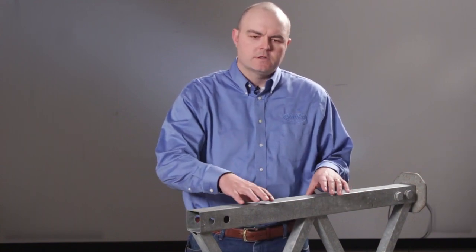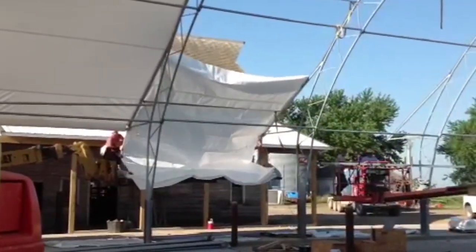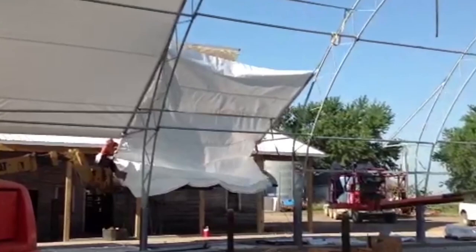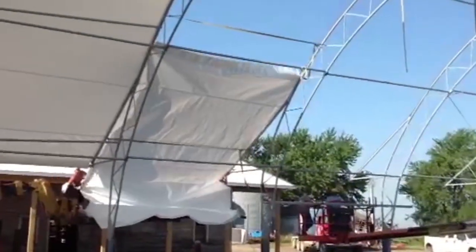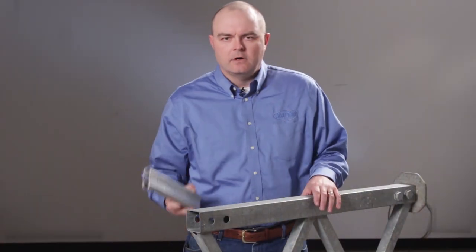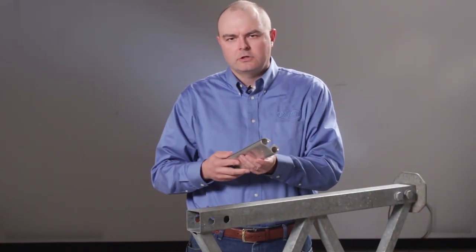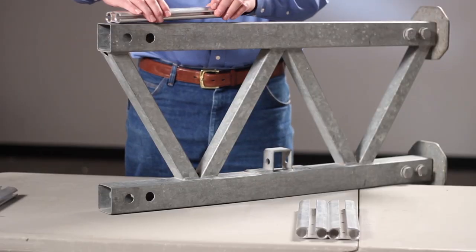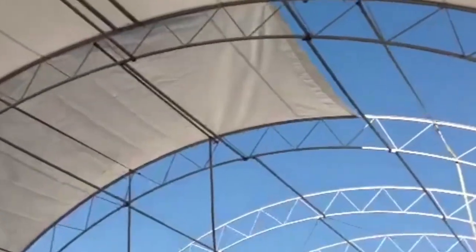Our Keter track system will work on trusses that are square steel tubing on the bottom, square on the top, or round tubing on the top cord, and they will also work on competitor's buildings. What this Keter track system involves is this track is unique to AccuSteel. It's an aluminum extruded track and we attach it to the top of the truss on every truss in the building.